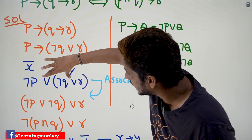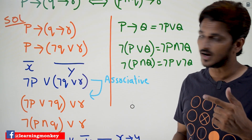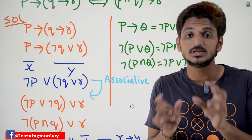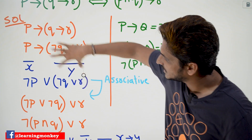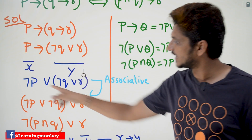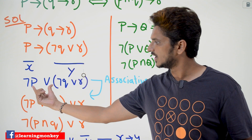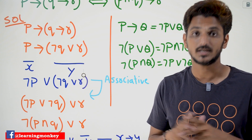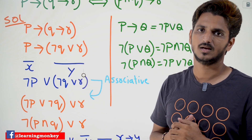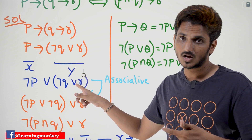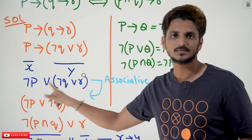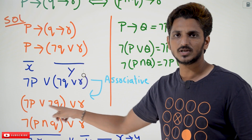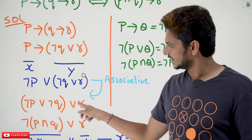By looking at this, you need to get the idea: both connectives are disjunction — same symbols — so you can apply associative law. You can place these brackets anywhere and get the entire equation the same. That is what associative law says: when you have same symbols, you can apply associative law. After applying associative law, we are keeping brackets around negation P disjunction negation Q, disjunction R.